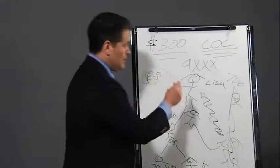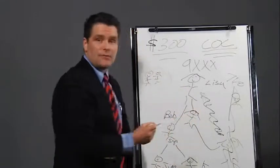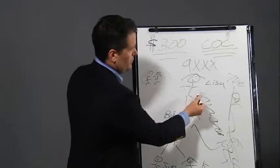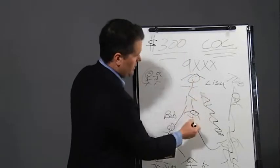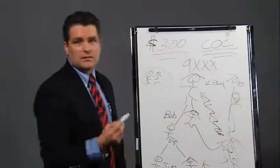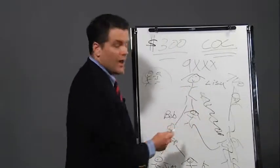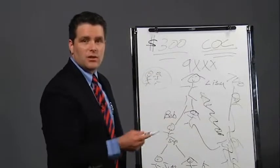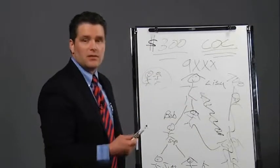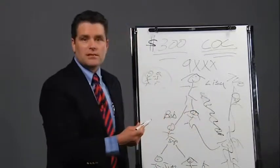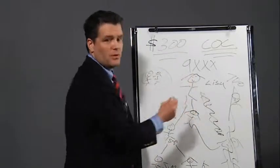Now you flip that, and if Lisa wants to give Sarah a gift for her birthday, she can. The rules do not prohibit Lisa, the superior, from giving the subordinate a gift valued at greater than $10. So if Lisa takes Sarah out to lunch and buys her lunch, a $50 lunch, she can do that. However, if you reverse it and Sarah tries to buy lunch for Lisa, she can't, because Lisa is her superior.